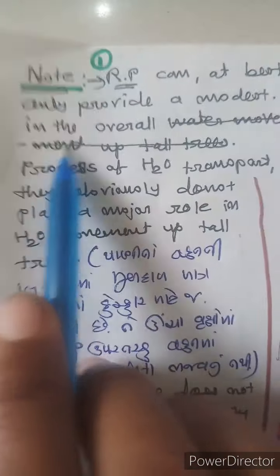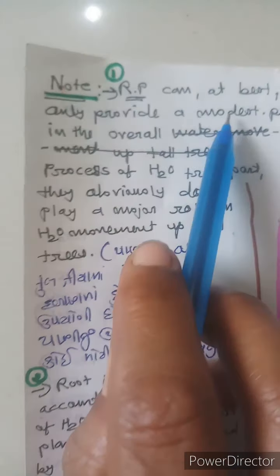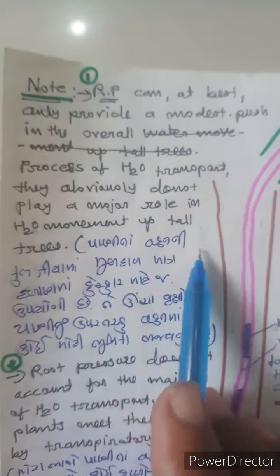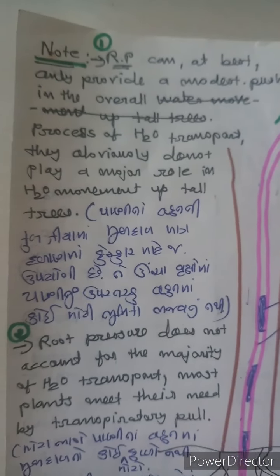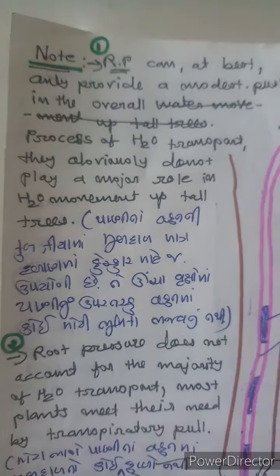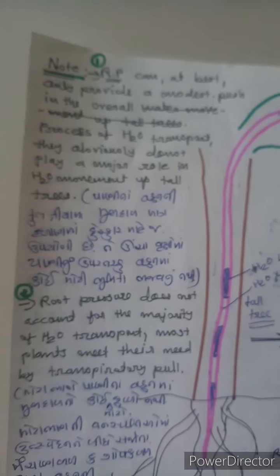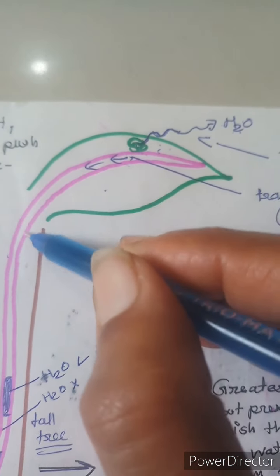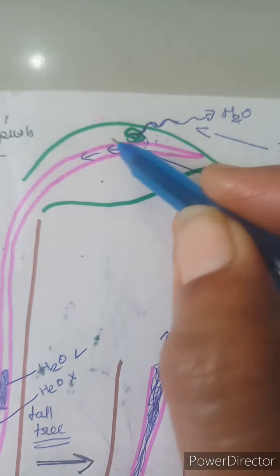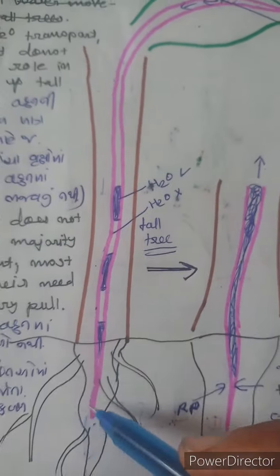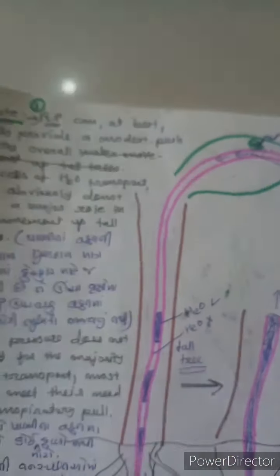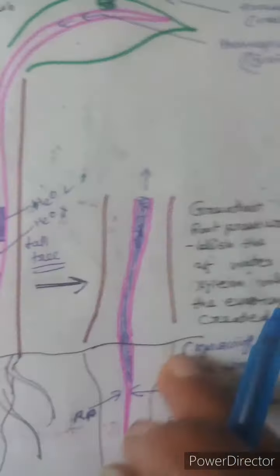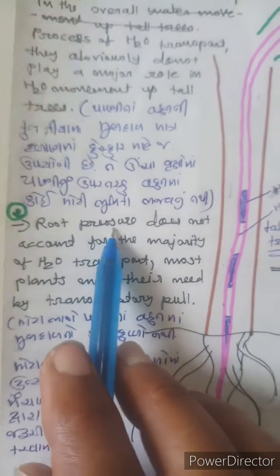Root pressure does not play a major role in water movement up tall trees. It does not account for the majority of water transport. Root pressure provides only a modest push and is helpful for establishing continuity, but it cannot transport water to great heights in tall plants.